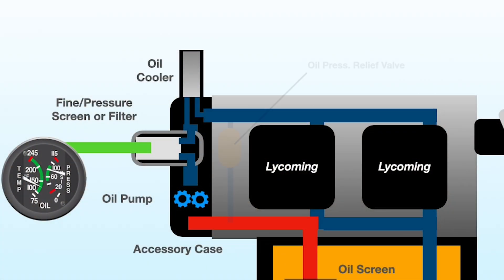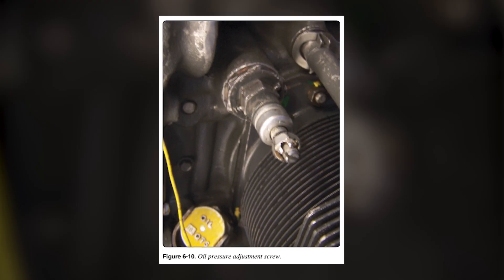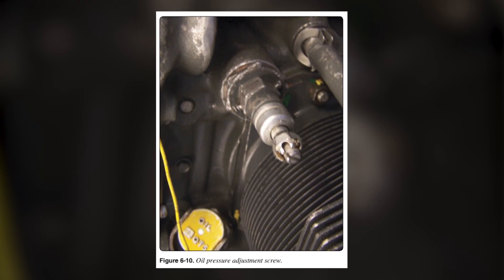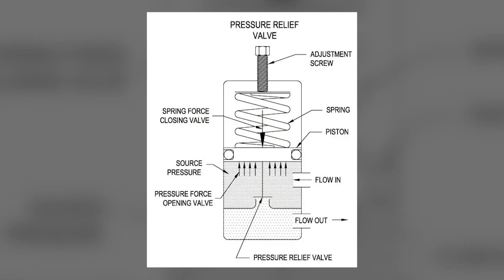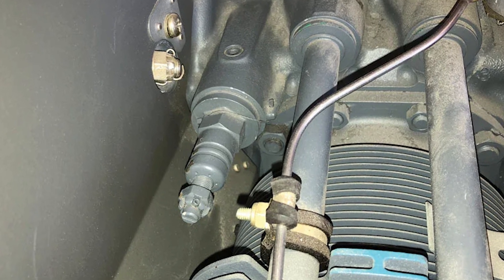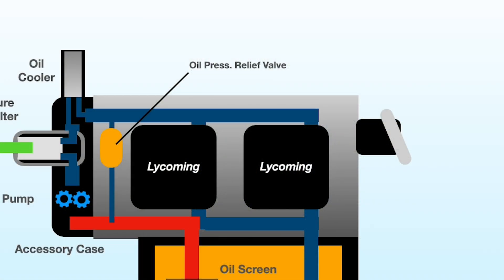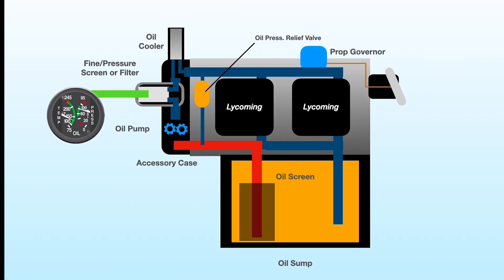Most aircraft engines also include an oil pressure relief valve, used to regulate the maximum pressure experienced in the oil system. This prevents damage to critical components and acts as a safety mechanism for the engine, and is usually located on the right side of the engine above the last cylinder. If the aircraft has a constant speed propeller, that system adjusts blade angle using engine oil and the propeller governor. Turbocharged engines also typically use engine oil to cool the turbine, which generates higher pressure for air going into the cylinders.